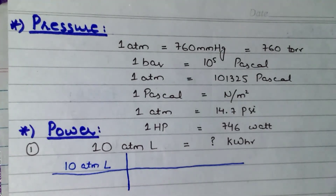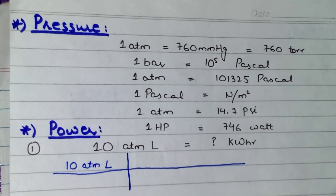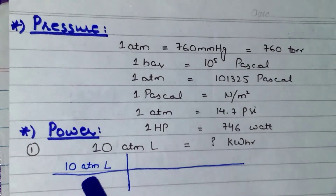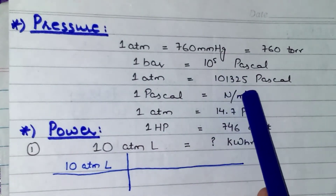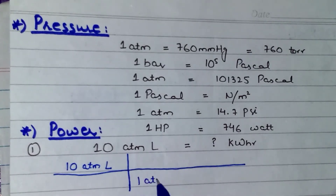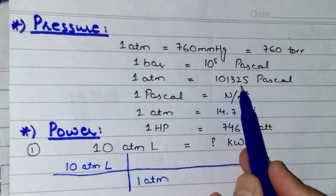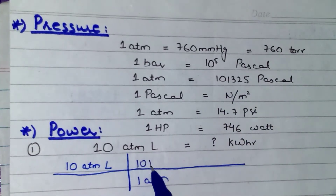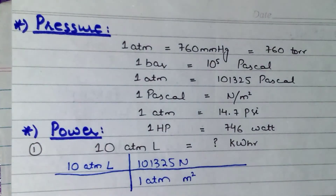So if we start solving this question, I have written it like this: 10 atm·L. Now, instead of this atm, I can write that 1 atm equals to 101,325 N per meter square. So I will write the atm term in the divide section and 101,325 N per meter square in the multiplication section — Newton per meter square. So this atm will cancel out that atm.